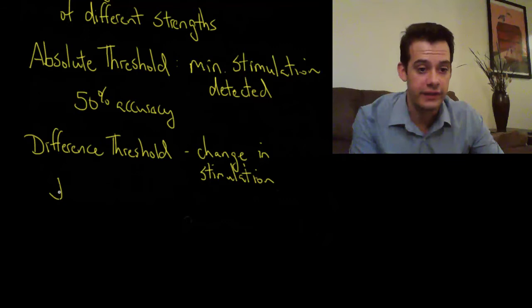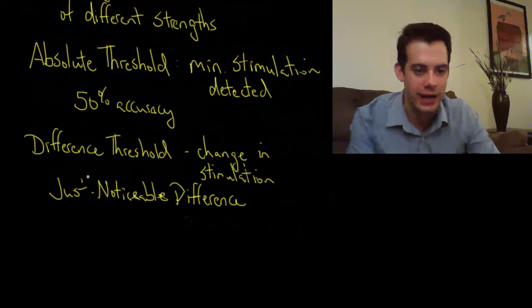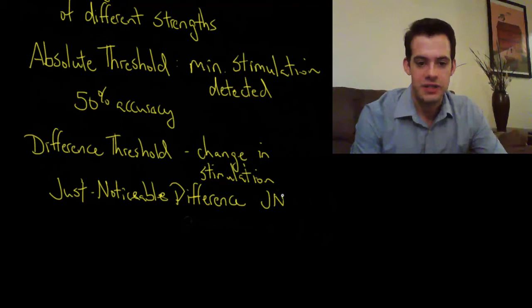And you may also see this called the just noticeable difference. And this is a pretty self-explanatory term here because the just noticeable difference is the smallest difference that you can just notice. Or you can see this called the JND.